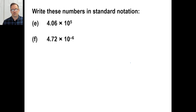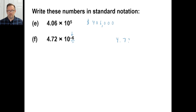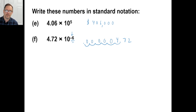Problems E and F — let's work backwards to standard notation. For E, you don't need to do any multiplication, just move the decimal five times: 1, 2, 3, 4, 5. For F, that negative exponent means it's going to be a really small number. Start with 4.72 and move it to the left: 1, 2, 3, 4, 5, 6. The answer is 0.00000472.